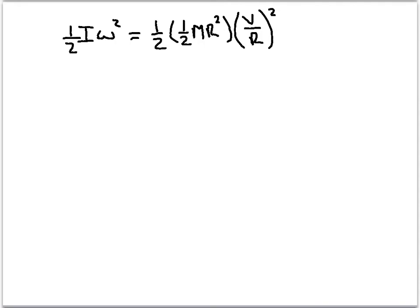We can go through here, and our R's are going to totally cancel out. So, our 1 half I omega squared becomes 1 fourth MV final squared.